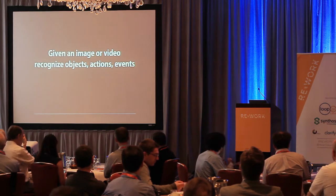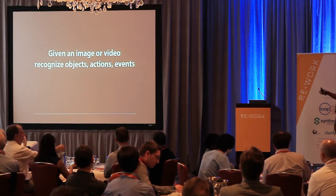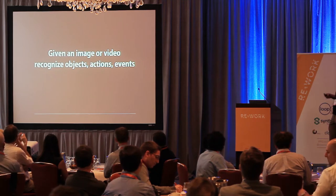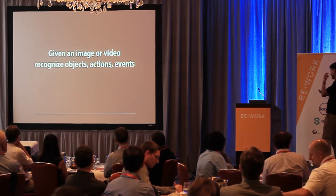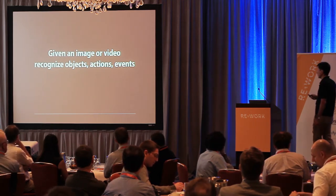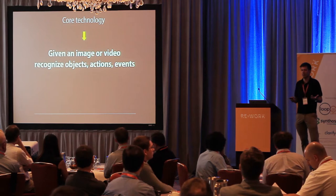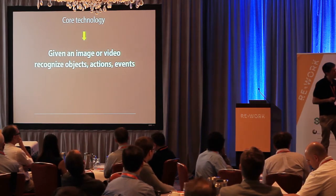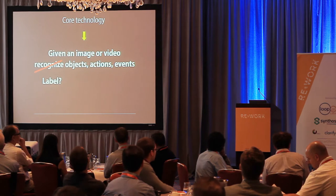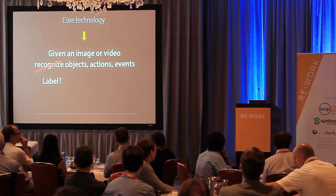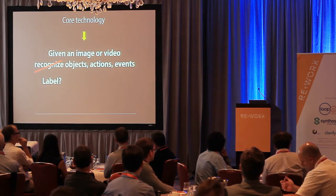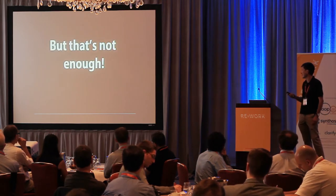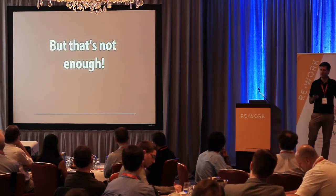We can define the computer vision task as basically, given an image or video, we aim to recognize objects, actions, and events. That's really the core technology, and that's what we're all doing for the most part. But are we really recognizing or just labeling? I think we're just labeling, and that's not enough.